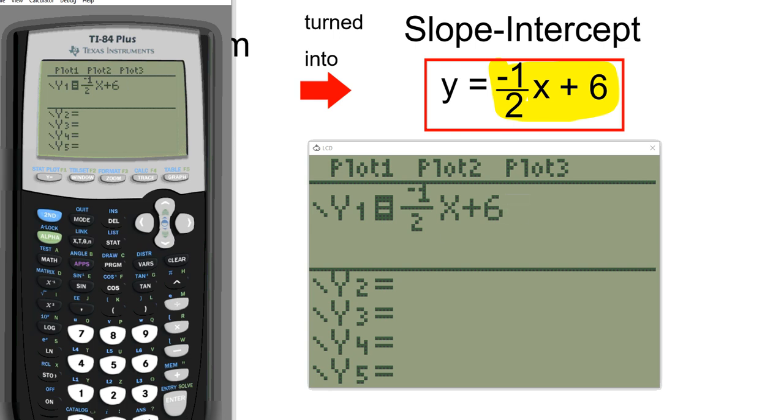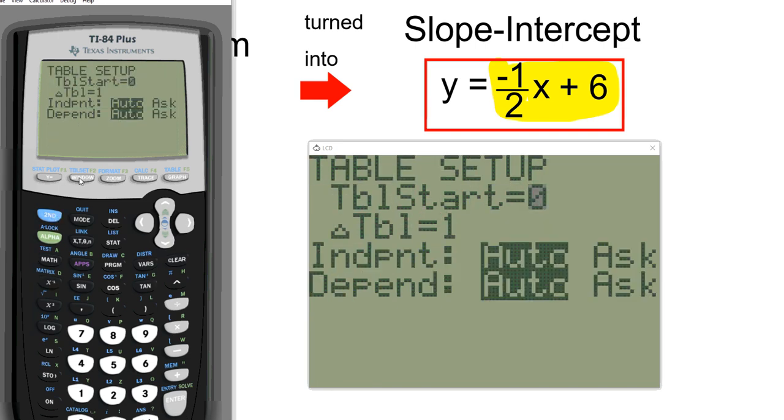The next thing that we need to do is basically hit the second key and then window, second and window, and that brings us to the table setup window right here. And if you notice right above window in blue, it's TBLSET. That stands for table setup, so that's an easy way for you to remember it.